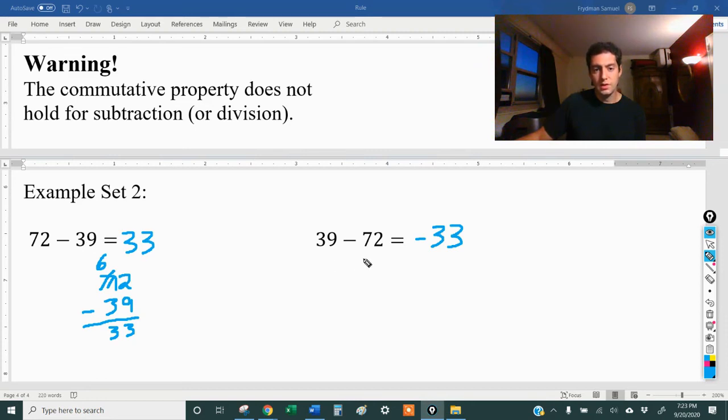Okay, and by the way, the work that I would do to solve this problem is exactly the same as the work that we would do over here. So for this problem, I would still do 72 minus 39. Notice even though the subtraction symbol was in front of the 72, I'm not putting it over here when I do the work. When you do the work for subtraction, the bigger number always goes on top and the smaller number always goes below.